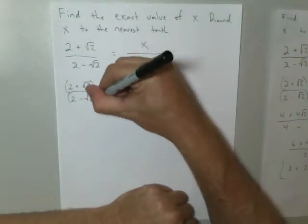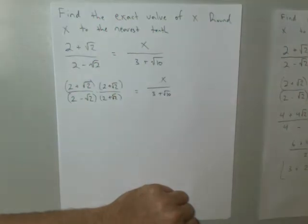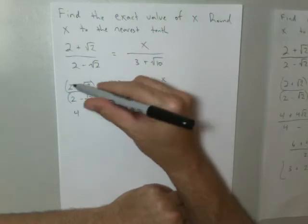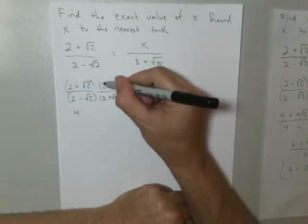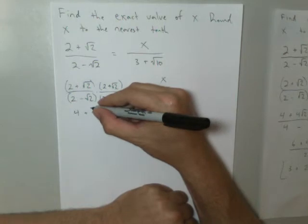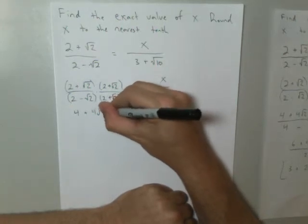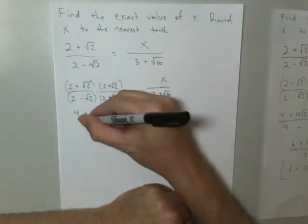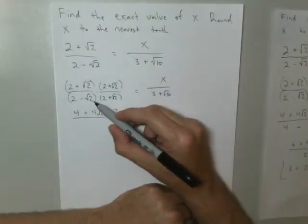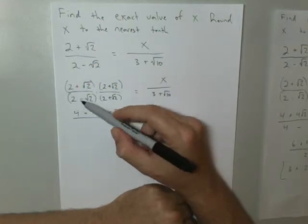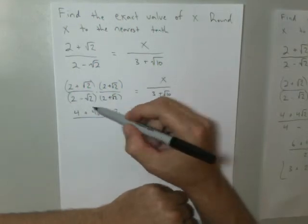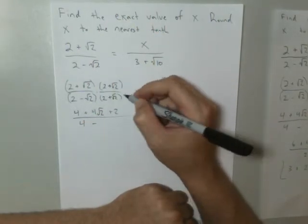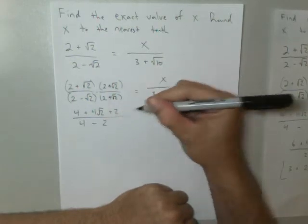I'm going to go ahead and put parentheses here just to make sure we know we're multiplying the quantities. So this numerator will be 4. The outside will be 2 root 2. The inside will be 2 root 2. So this is plus 4 root 2. Square root of 2 times the square root of 2 is 2. So we're going to go ahead and add that. Now on the bottom, we pick this because the inside, negative 2 root 2, will cancel out with the outside, which is positive 2 root 2. So what we get is 2 times 2 minus the square root of 2 times the square root of 2, which is 2.